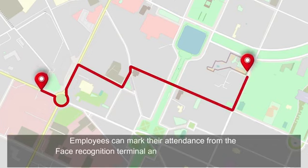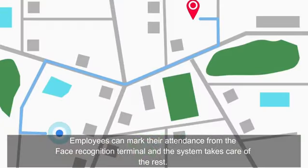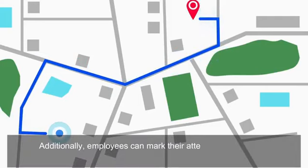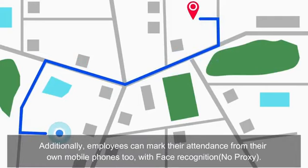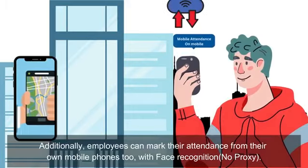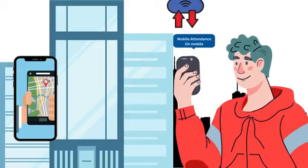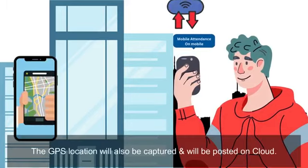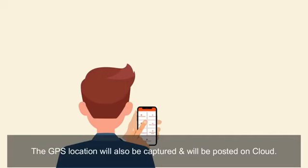Employees can click their selfies and enroll themselves on the face recognition terminal, all in under 10 minutes. Employees can mark their attendance from the face recognition terminal and the system takes care of the rest. Additionally, employees can mark their attendance from their own mobile phones too, with face recognition — no proxy. The GPS location will also be captured and posted on cloud.